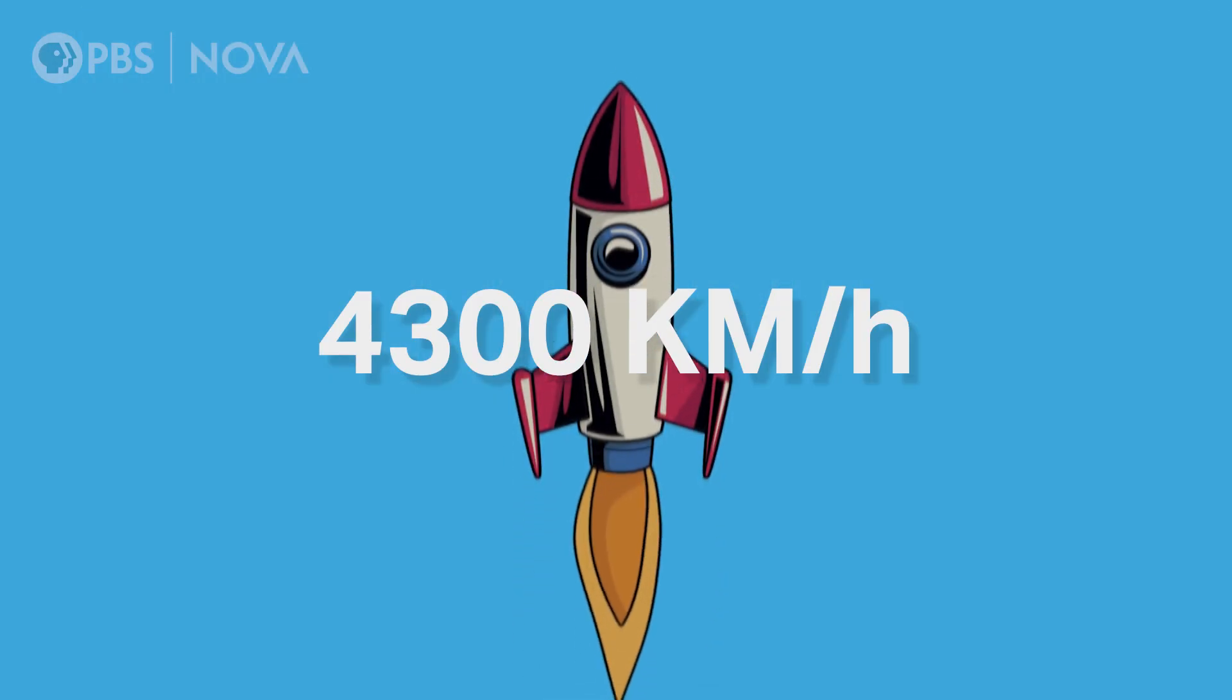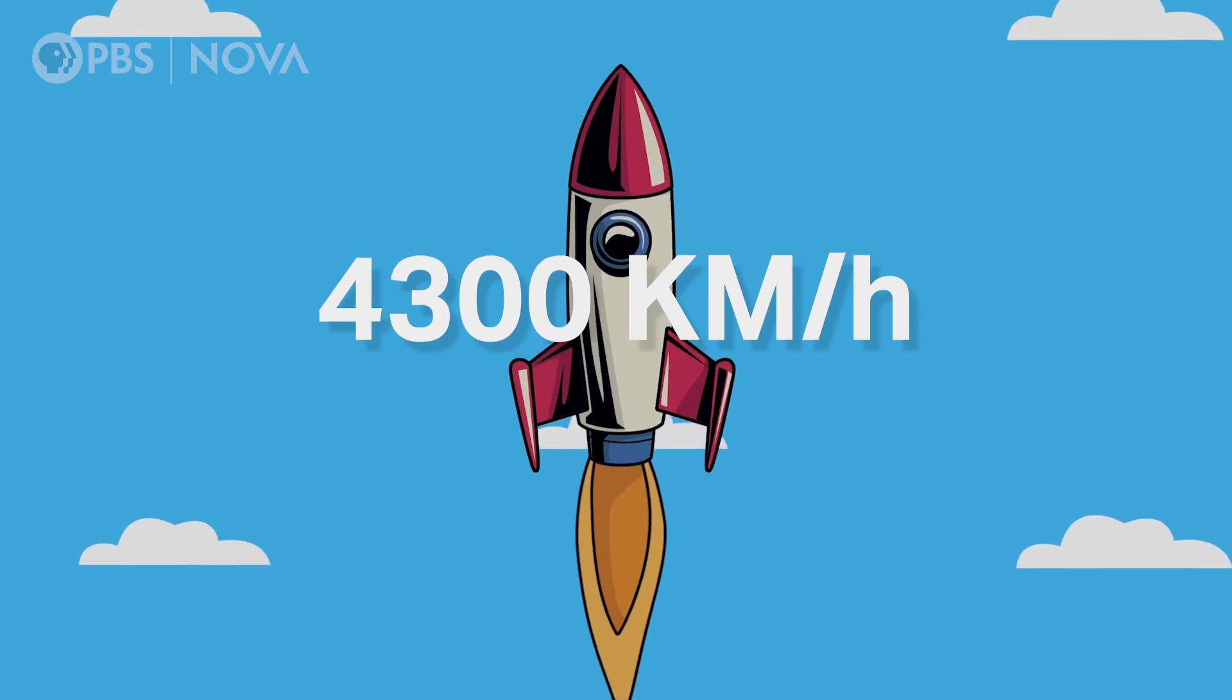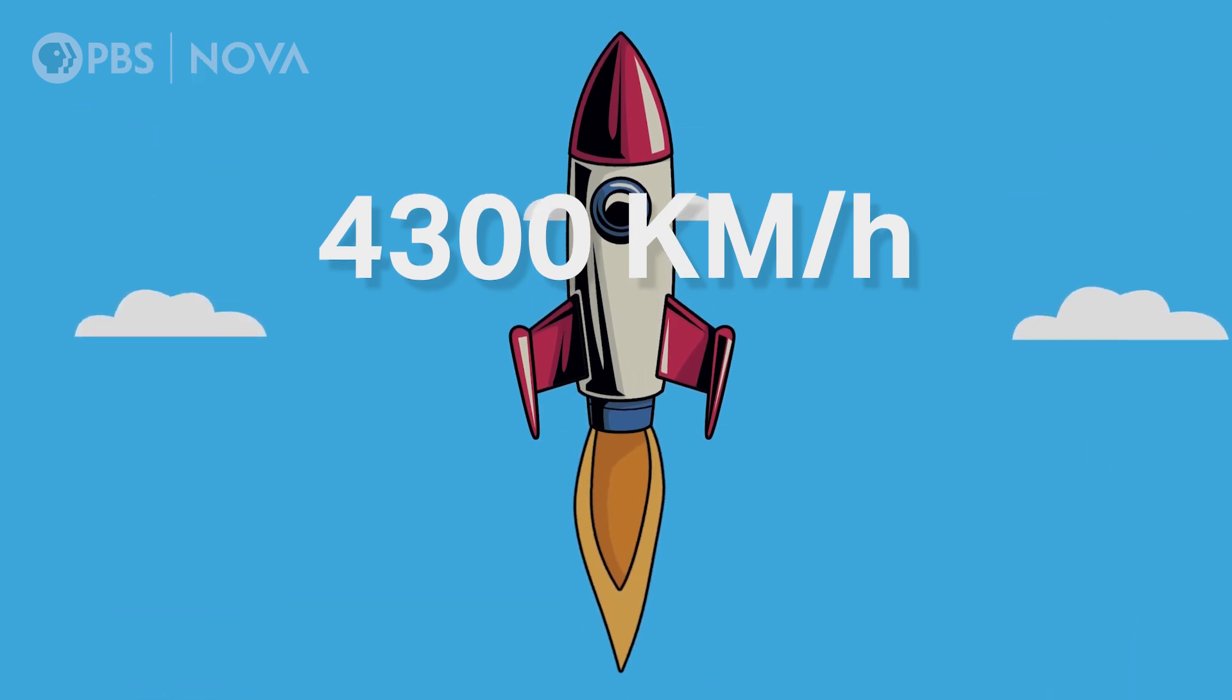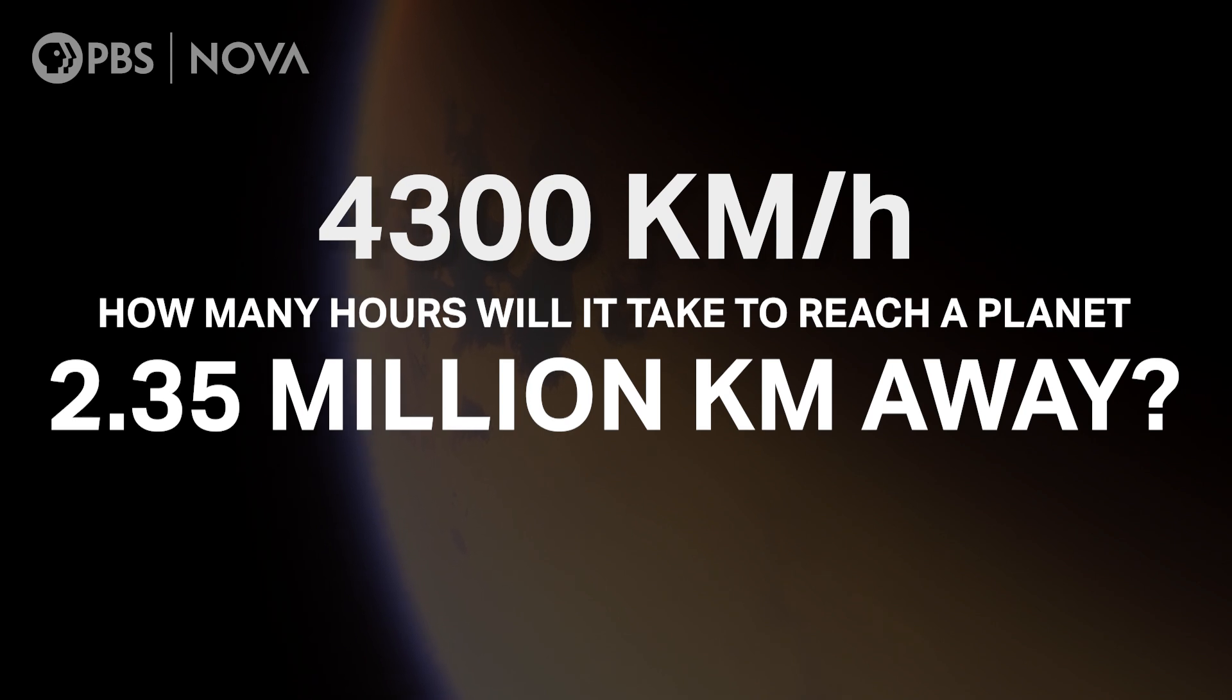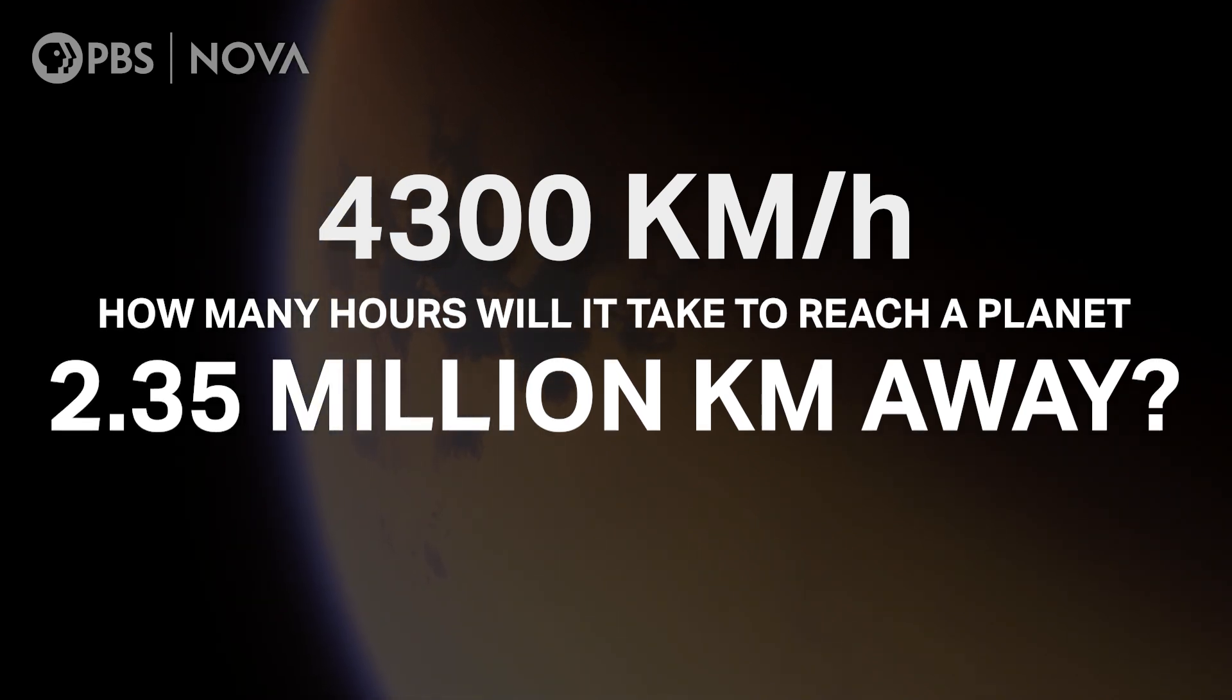To put Apoorva's mental math skills to the test, we've come up with a problem that's fit for Nova and asked Apoorva to share her secret to solving it. A rocket is traveling at a consistent velocity of 4,300 kilometers per hour. How many hours will it take to reach a planet 2.35 million kilometers away?